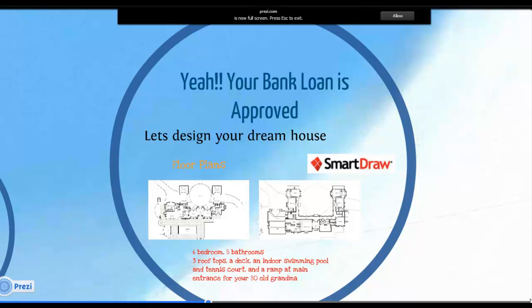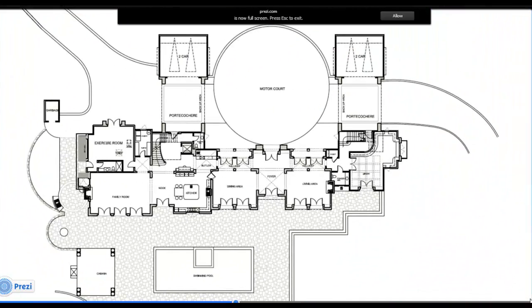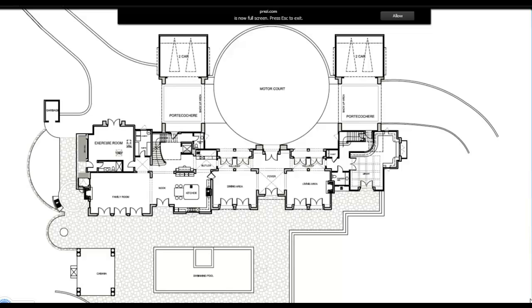First of all, you need to create a floor plan, which can be done using the Smart Draw software. Here's an example of your first floor, which is a layout plan. You can have different rooms with different arrangements, different shapes and sizes.